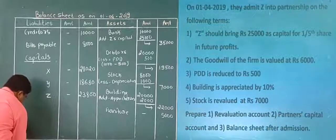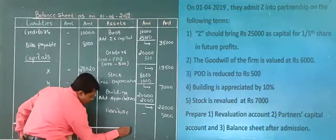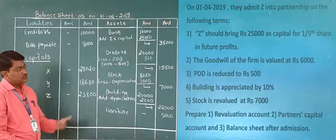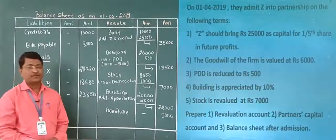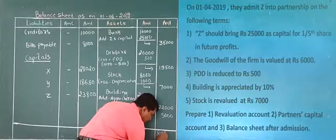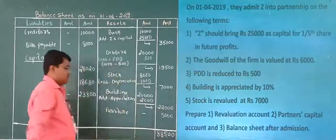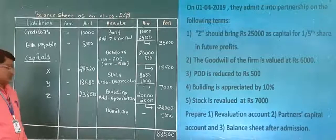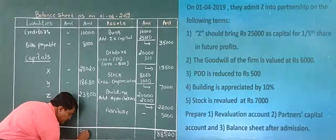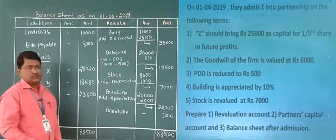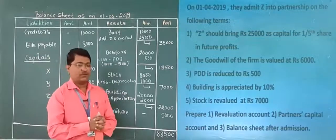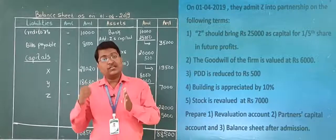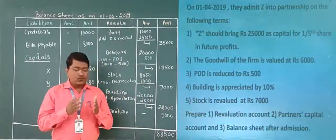Now please check both sides. The asset side total: 35,000 + 19,500 + 7,000 + 22,000 + 5,000 = 88,500. The liability side total: 10,000 + 8,000 + 28,000 + 18,680 + 23,800 = 88,500. Both sides match, so the balance sheet for this problem is complete.